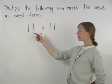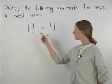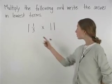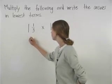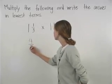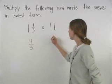To multiply a mixed number times a whole number, first write each of them as an improper fraction. So we can rewrite 1 and 1/3 as the improper fraction 4/3, and we can write 11 as the improper fraction 11/1.